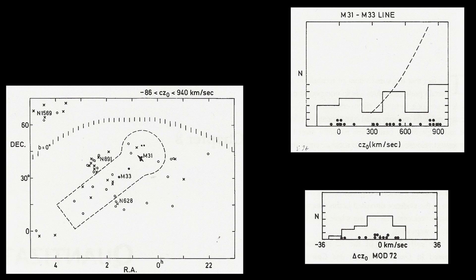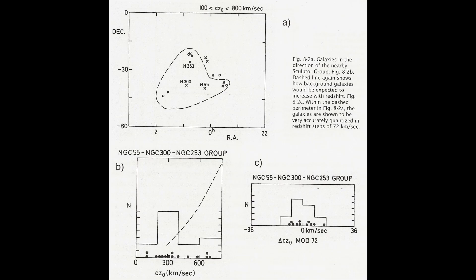If we perform the same analysis on the Sculptor group, which is the next nearest group between us and the M81 group, then here once more we see a very similar pattern. A clear periodicity at 72 kilometers per second.